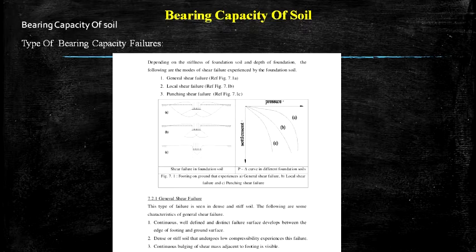In this slide I have discussed the types of bearing capacity failure. Bearing capacity failure depends on the stiffness of foundation soil and depth of foundation. The modes of shear failure are: general shear failure, local shear failure, and punching shear failure. General shear failure is seen in dense and stiff soil. Its characteristics are: a continuous, well-defined and distinct failure surface develops between the edge of footing and the ground surface; dense or stiff soil with low compressibility experiences this failure; and continuous bulging of the shear mass adjacent to the footing is visible.